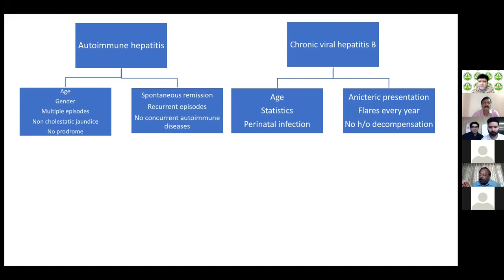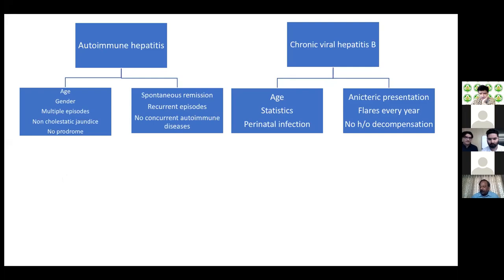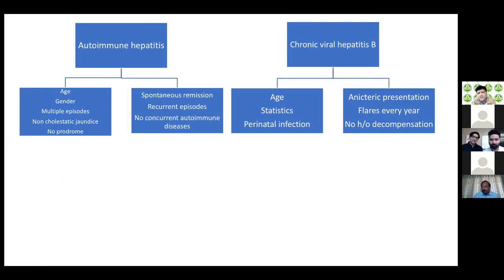Dr. Setu Babu posed a hypothetical: if the patient were cholestatic, what additional diagnoses would be considered? PSC, PFIC type 3, and BRIC were discussed. BRIC — Benign Recurrent Intrahepatic Cholestasis — is a better fit than PFIC for a recurrent, self-resolving presentation, since PFIC is a progressive disorder leading to liver failure. PFIC1 and PFIC2 occur in children; PFIC3 can occur in adults. However, since this patient is non-cholestatic, BRIC and PFIC remain hypothetical.